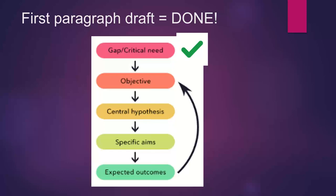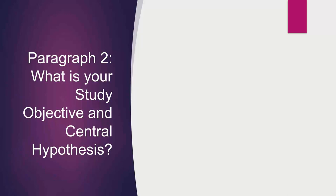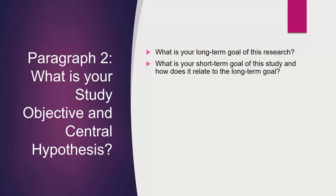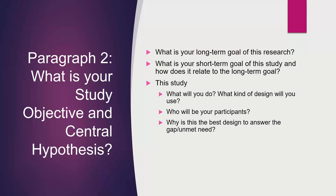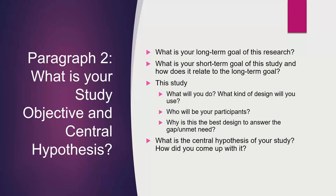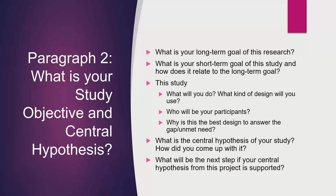Now we go to paragraph two, which covers objective and central hypothesis. What's your study objective and central hypothesis? What is your long-term goal of this research? What is your short-term goal and how does it relate to the long-term goal? What will you do, what kind of design will you use, who will be your participants, and why is this the best design to answer the gap or unmet need? What is the central hypothesis and how did you come up with it? Did you have your own preliminary data or is it based on the literature? What would be the next step if your central hypothesis is supported?